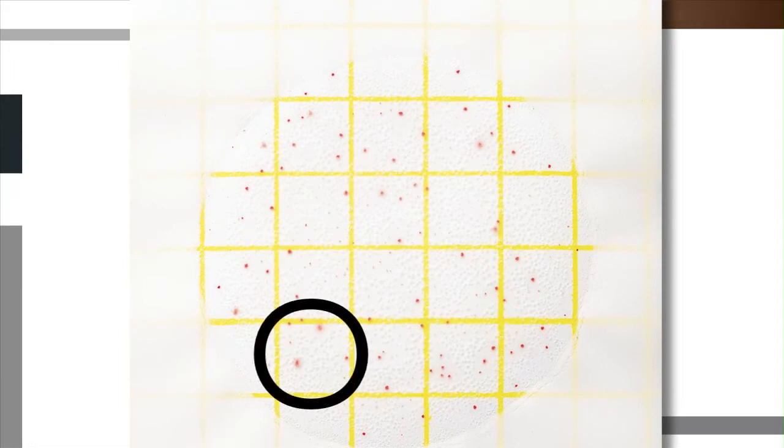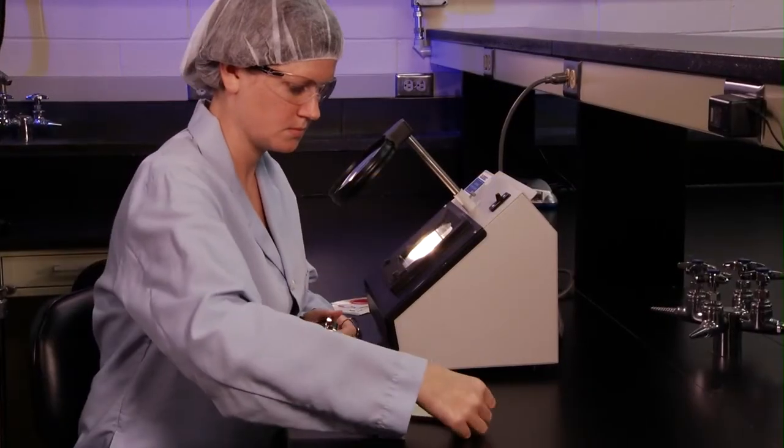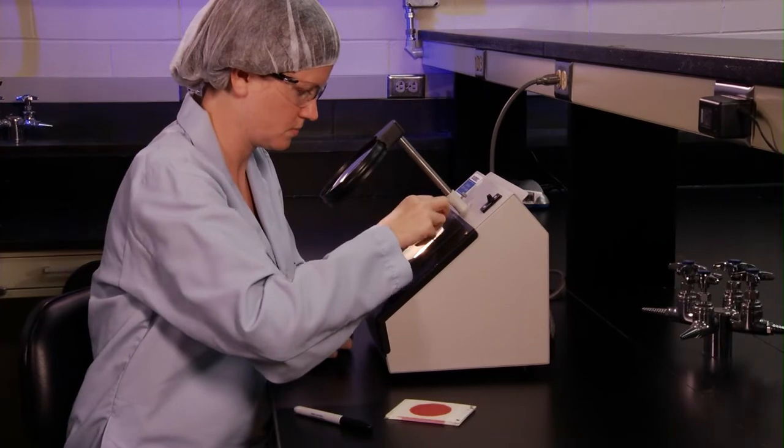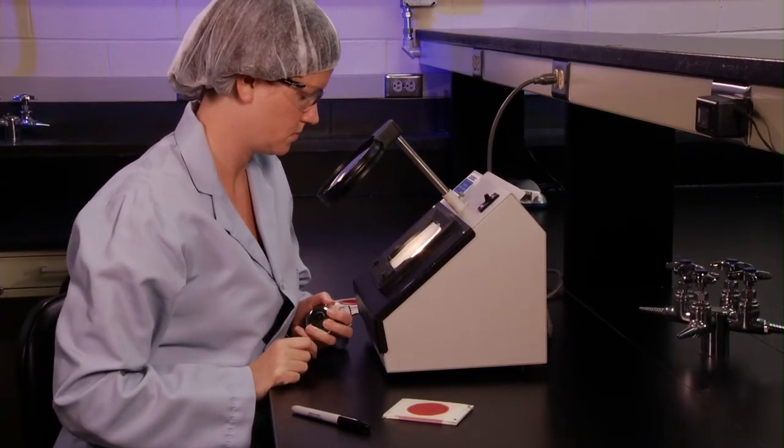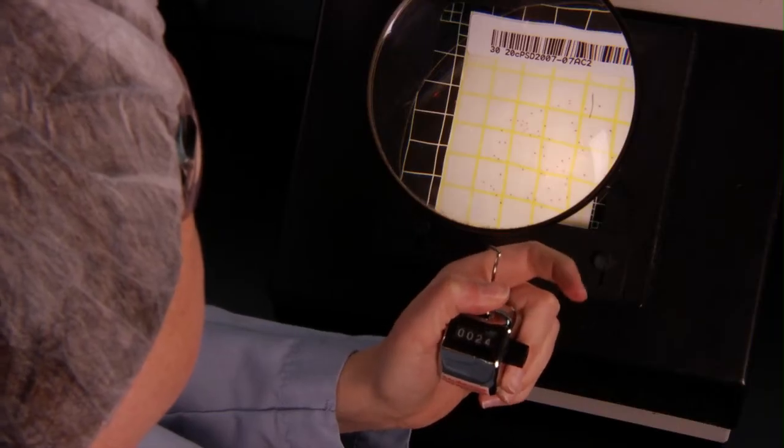All colonies should be counted, regardless of size or color intensity. Good lighting is necessary for accurate counting. An illuminated magnifier and a hand tally may help for counting bacterial colonies.